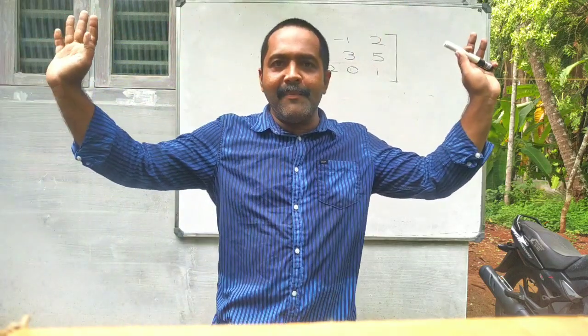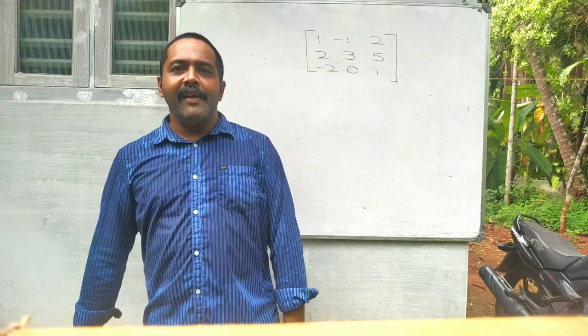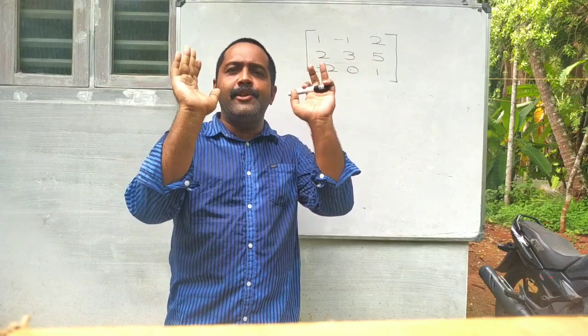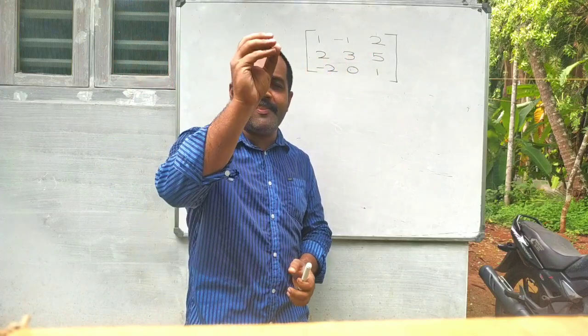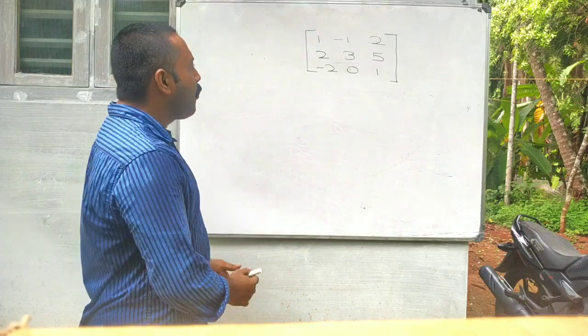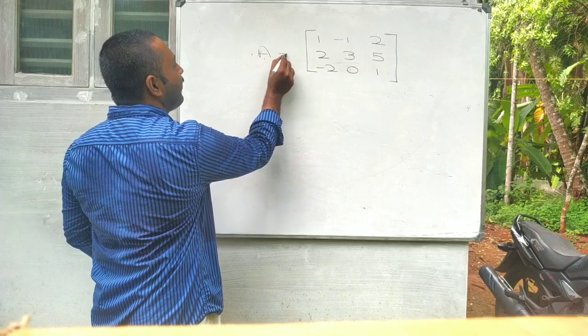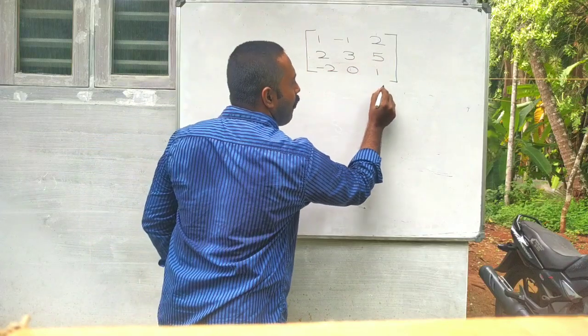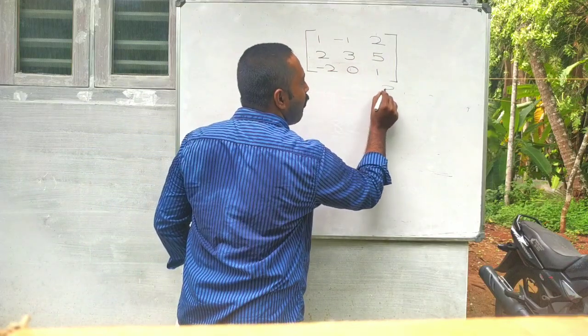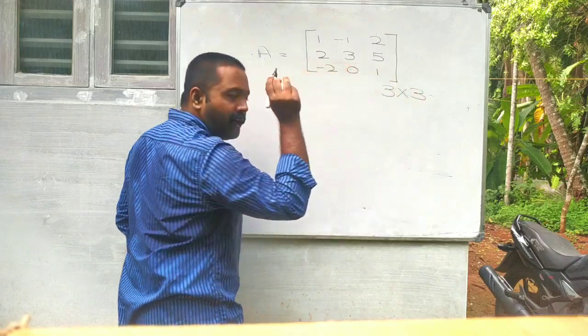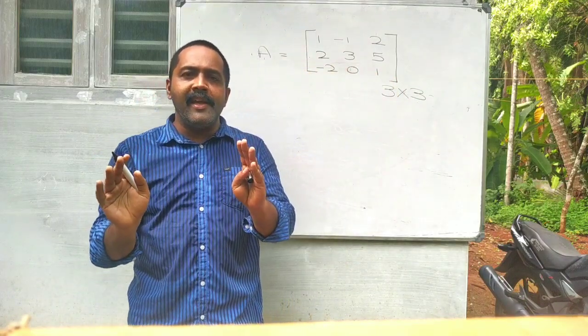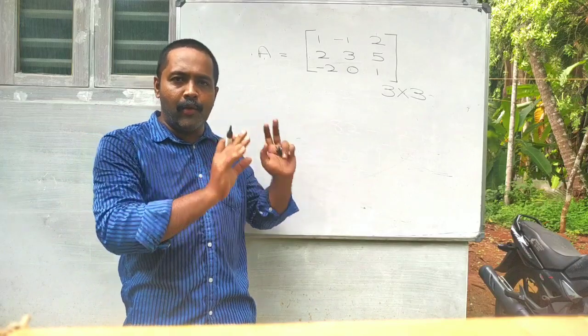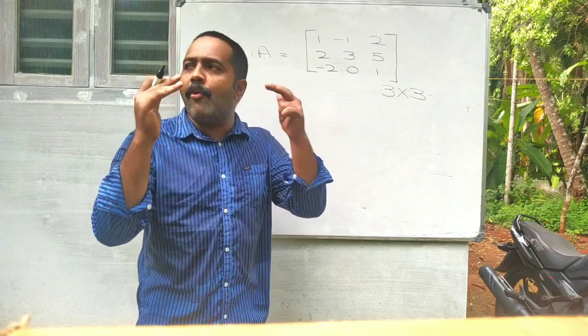Hi, welcome to PR Max. How we can find the adjoint of a matrix within 30 seconds? Look, A is equal to matrix 1, -1, 2, -2, 3, 5, -2, 0, 1. This is a square matrix of order 3. Third order matrix is the adjoint of a matrix.